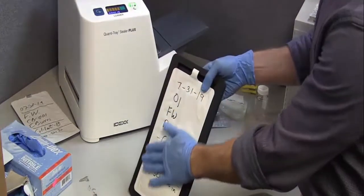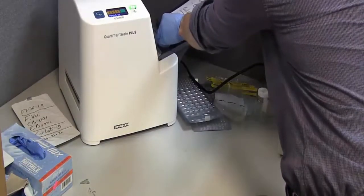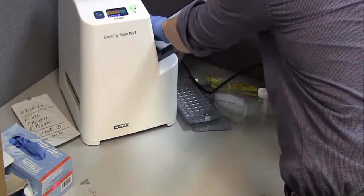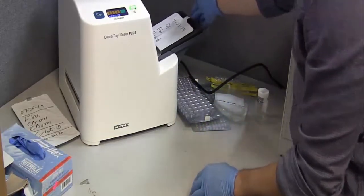The unit has a digital display on the front that lets you know your power and warming modes. Also has the counter for how many trays have gone through the sealer.